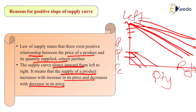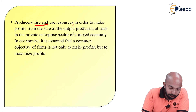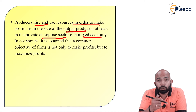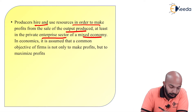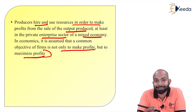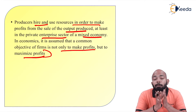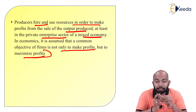This is very important to understand — where the slope goes from and how the curves move. The next point: producers hire and use resources in order to make profits from the sale of output produced, at least in the private enterprise sector of a mixed economy. Producers use technologies to minimize cost of production so that they can maximize profit. In economics, it is assumed that the common objective of the firm is not merely to make profit, but to maximize profit — using fewer resources for maximum output.